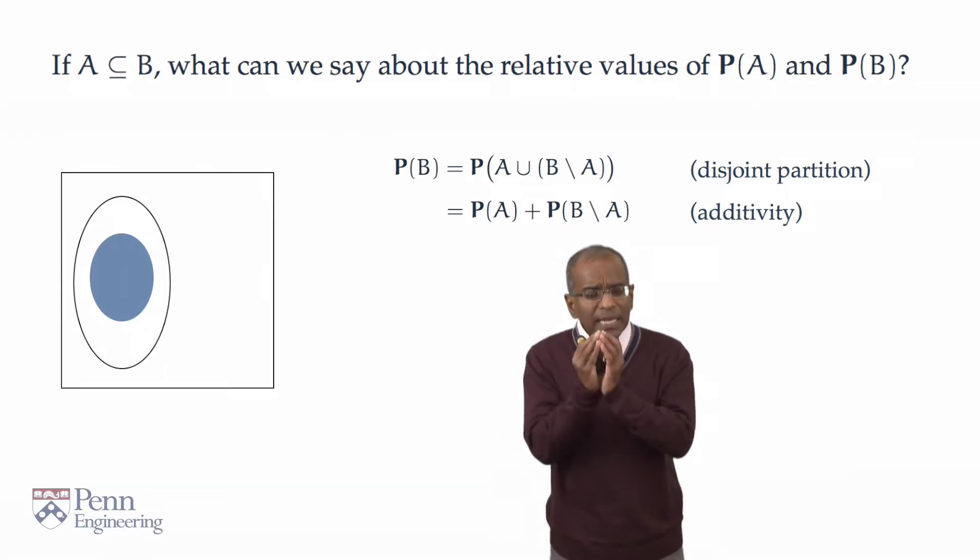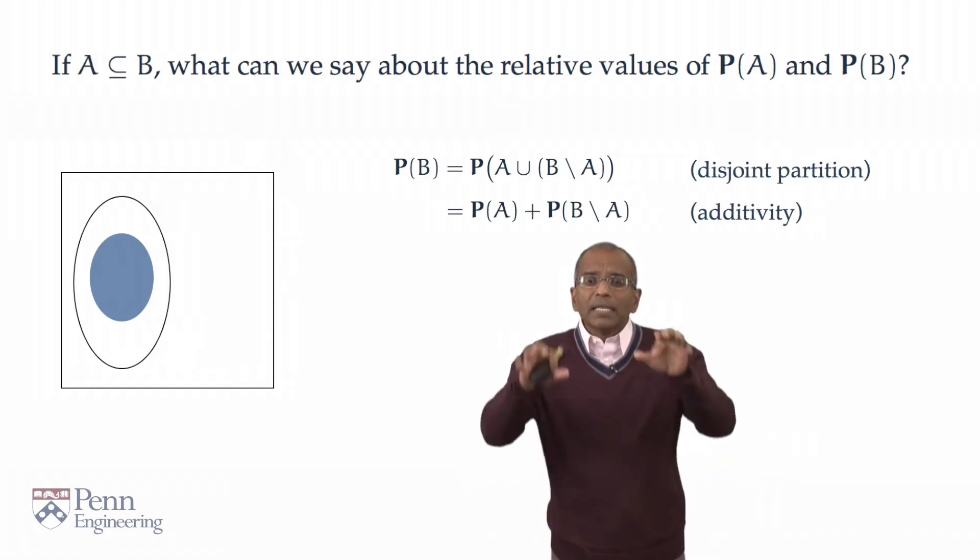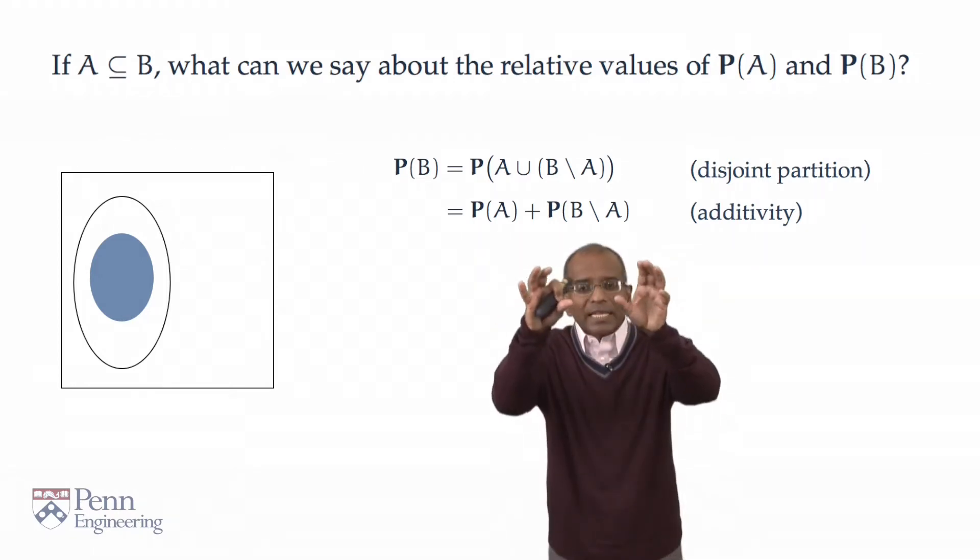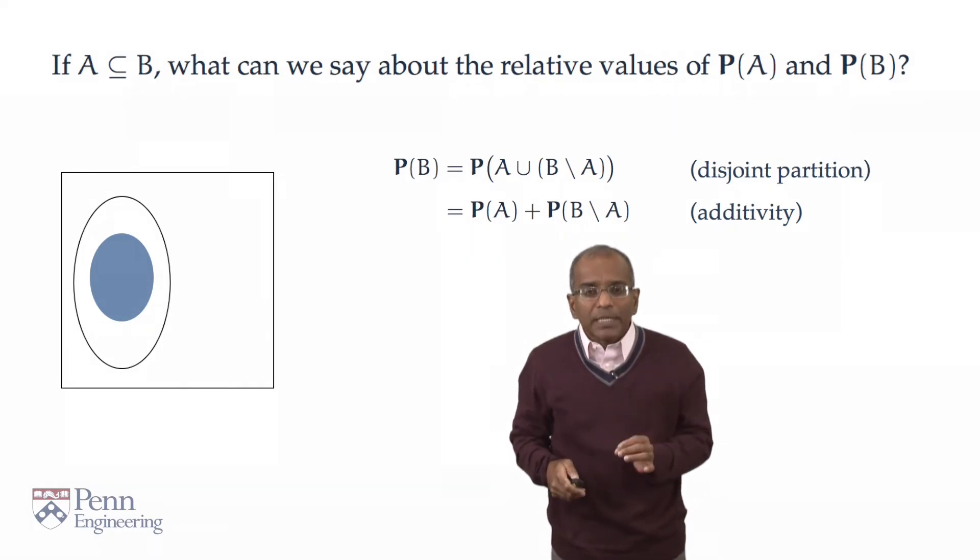Very good. But now let's take a look at the second term on the right, the probability of the event B minus A, the things outside A and in the annulus between A and B. Now, we don't know much about this probability except that it is a probability. And the positivity axiom tells us that whatever this is, this must be non-negative.